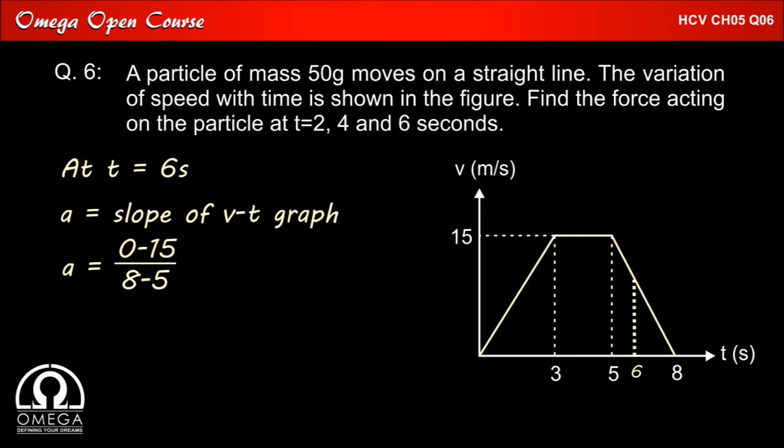Therefore, the acceleration will be minus 15 by 3, that is minus 5 meter per second square. So the force will be mass into acceleration which comes to minus 0.25 newton. The negative sign here indicates that the force will act in opposite direction of the displacement or opposite direction of the motion.